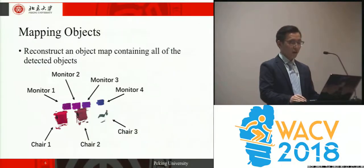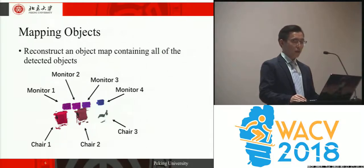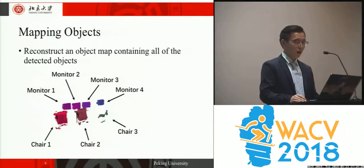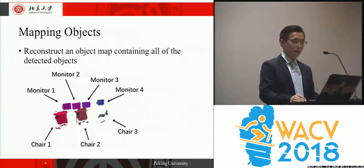Another important process in our system is mapping objects. We reconstruct an object map containing all detected objects, where every 3D point in the map is assigned an object ID for recognition. This object map with IDs can be used to enhance the detector in a later step.